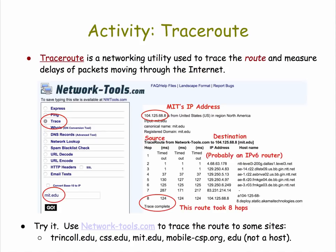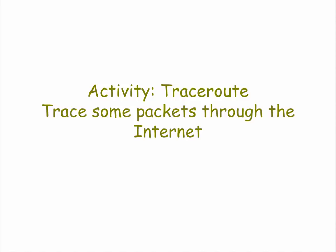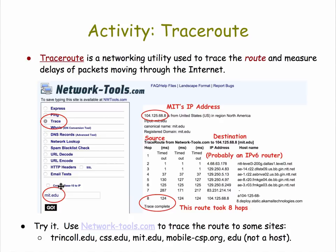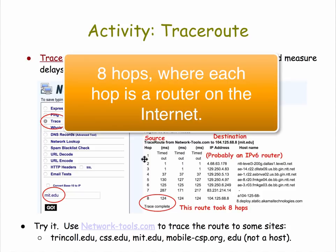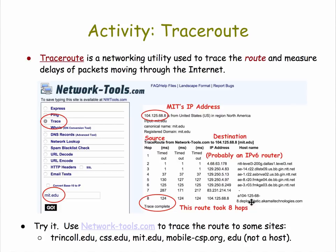Let's now look at another network utility called TraceRoute that lets us trace how packets are routed through the Internet. You can get to this through the networktools.com site — this time select the trace tool. Suppose I want to trace packets as they travel between network tools and MIT. I put in MIT.edu and click Go. It shows MIT's IP address. The source is the TraceRoute server and the destination is MIT's IP address. What we're seeing is packets being routed through different routers and computers on the network. This particular trace required eight hops to go from the source to the destination. If you do this repeatedly, you'll see that the eight hops aren't always exactly the same — in fact, there could be more or fewer. You might want to pause the video here and try tracing routes to different addresses.